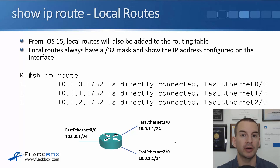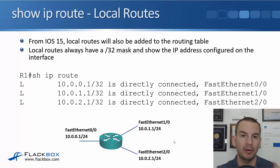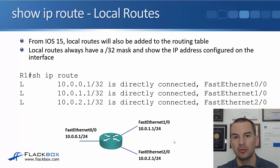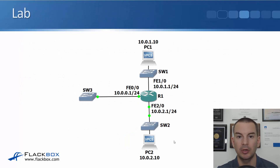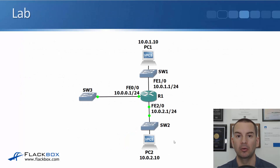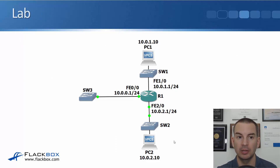Local routes always show up as a /32, no matter what subnet was actually configured on the interface, and they show you the IP address configured on that interface. That's everything about connected and local routes. Let's have a look at this in the lab — we'll do that in the next lecture.